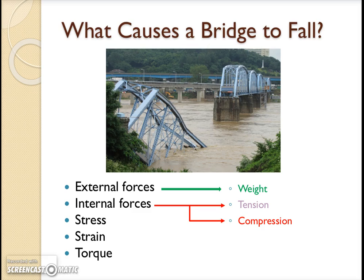It's tension and compression within the beams of the bridge that actually cause breakage. Stresses and strains also cause wear and tear on the bridge and can cause motion and breakage, the most dramatic of all of which is shear. Torque is also an issue — the bridge stays where it is, but one beam or one part starts to twist, rotate and fall, exactly as this one has done here.